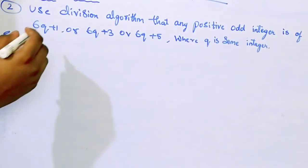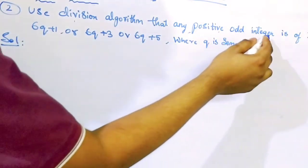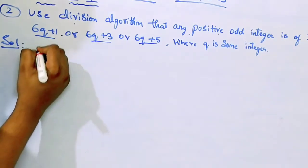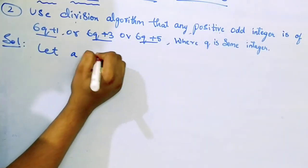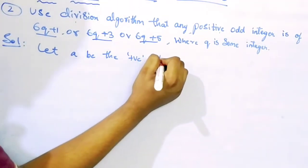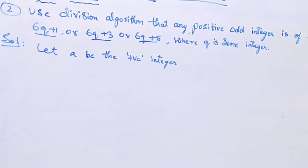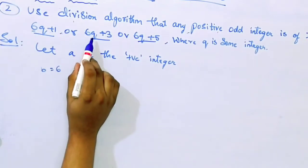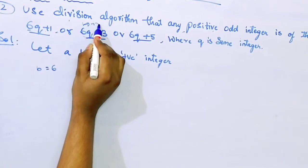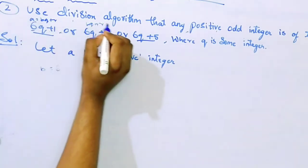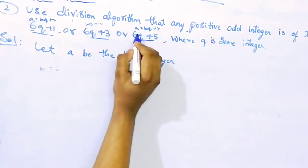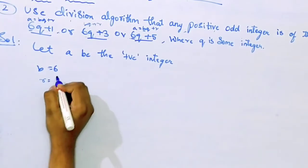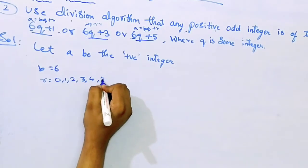Second question: use the division algorithm to show that any positive odd integer is of the form 6q + 1, 6q + 3, or 6q + 5. Let A be a positive integer and take B = 6, since the expressions have 6 as the common factor. A = BQ + R means A = 6q + R, and R can be 0, 1, 2, 3, 4, or 5 (not 6, since remainder must be less than B).